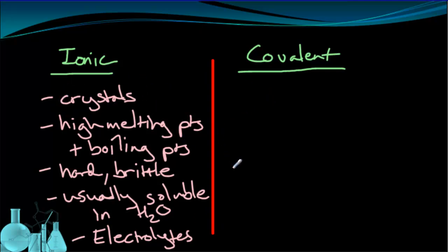These are the key properties of ionic compounds that are frequently used to identify them. A lot of the covalent properties are going to look like mirrors of the ionic ones in terms of just being opposites.